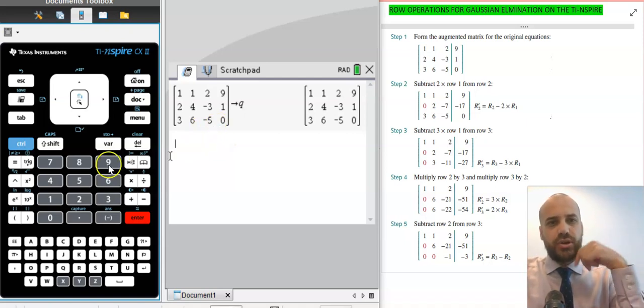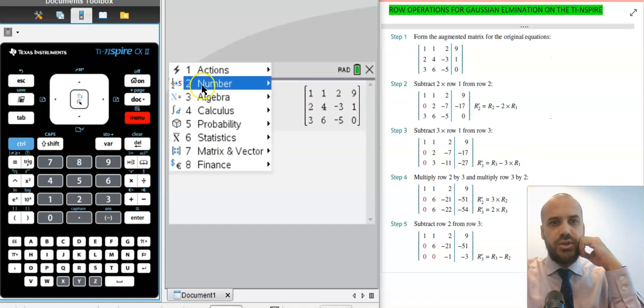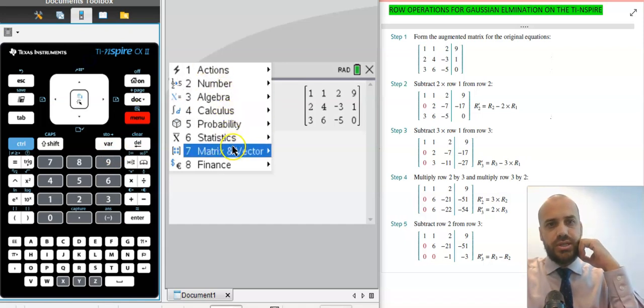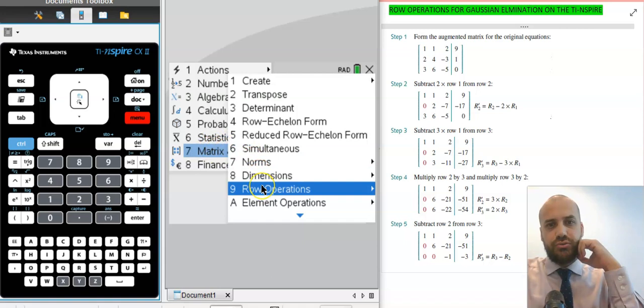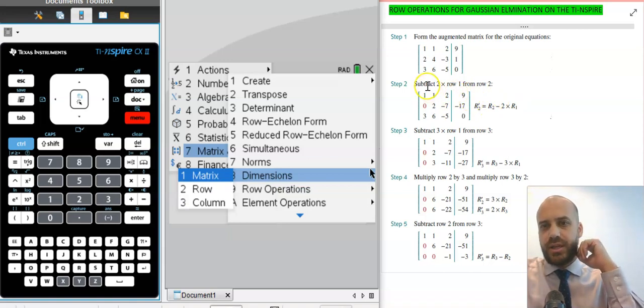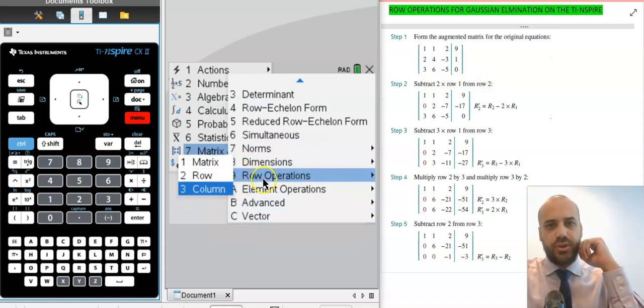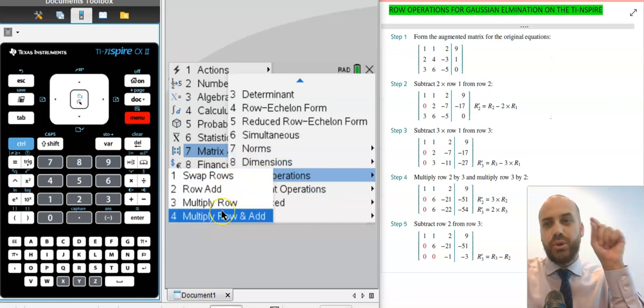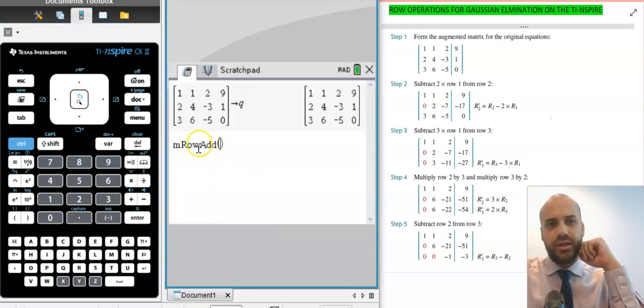So if we want to do row operations, it's the same thing every time. We go into menu, we go down to where it says matrix and vector, and we choose row operations. And then we choose the row operation that we want to do.